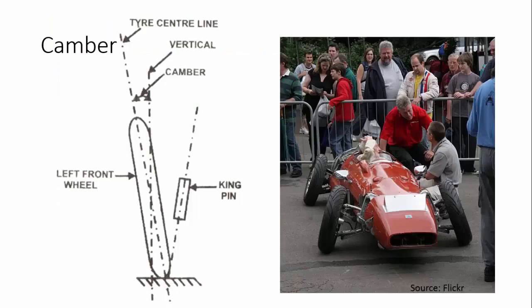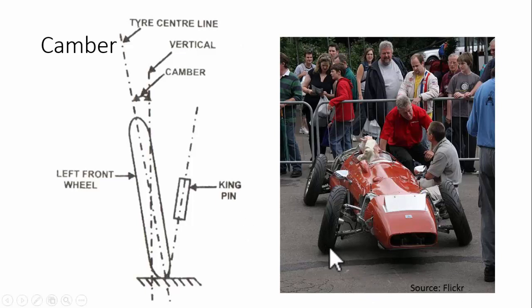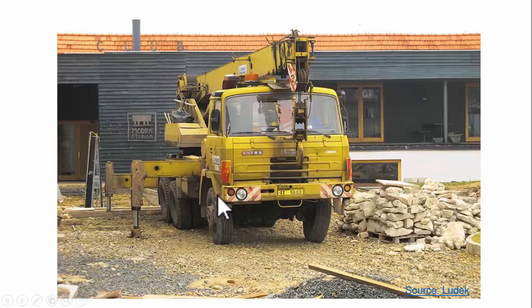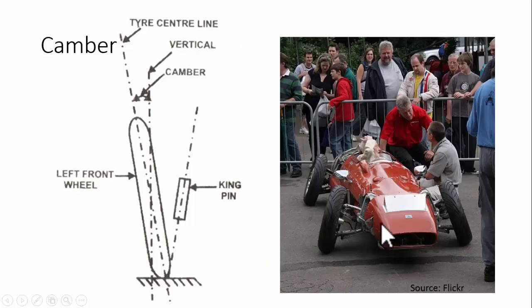The next angle is camber angle. As you can see in this figure, this is a negative camber. A negative camber is where the top side of the wheel is inside and the bottom side is outside. Whereas in a positive camber, the top side of the wheel is outward and the bottom side is inward.